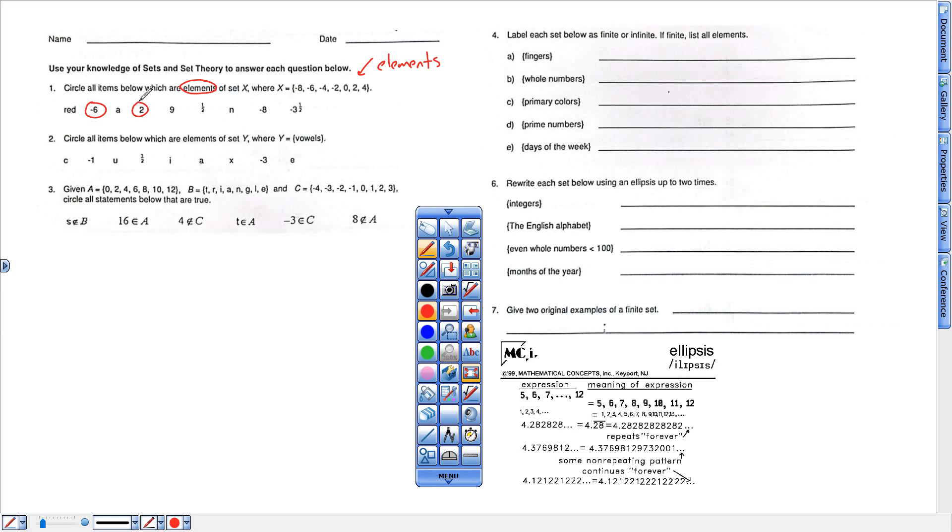9, nope. This half, nope. The letter N, nope. Negative 8, yes. And then that negative 3 and a half, nope. None of those other numbers are parts of that set X. They are not an element. Only negative 6, 2, and negative 8.